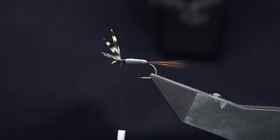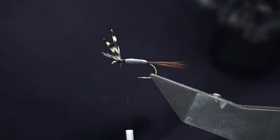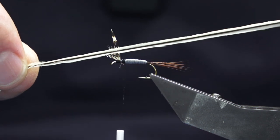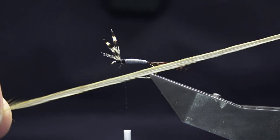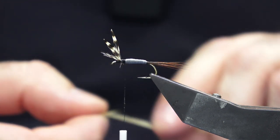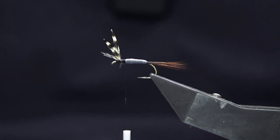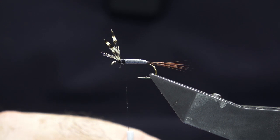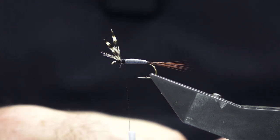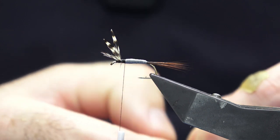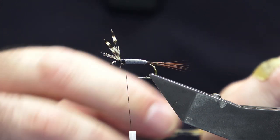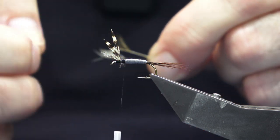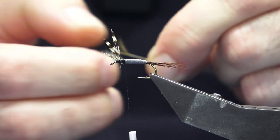Now the hackles at the front - you can use grizzle and brown. What I'm going to use is this nice badger dry fly hackle, a nice light brown. I do have the correct hackles for it, but I just like to tinker - that's what fly tying is about, just messing about and seeing what works. Just clearing away the fibers at the bottom of the hackle.